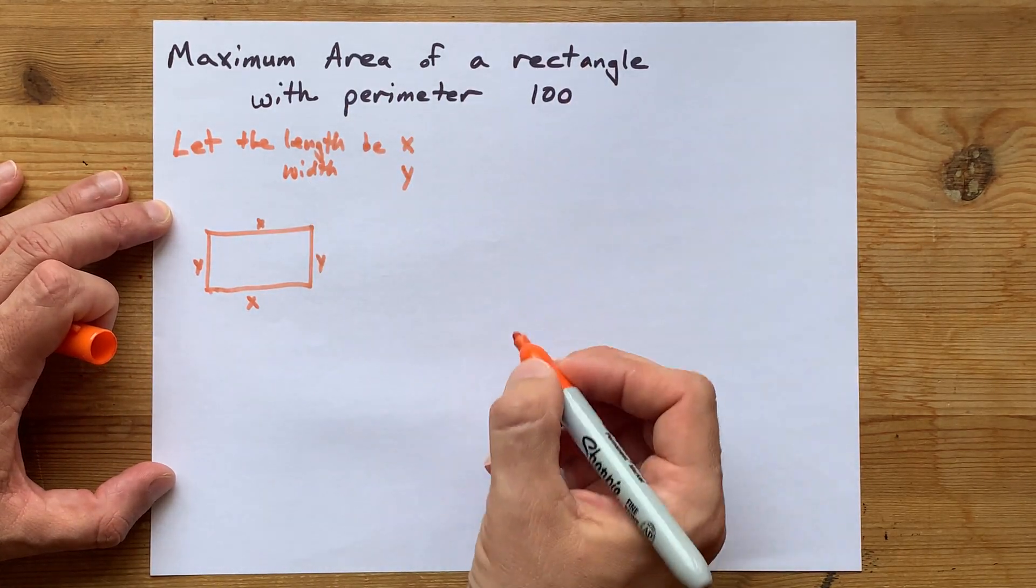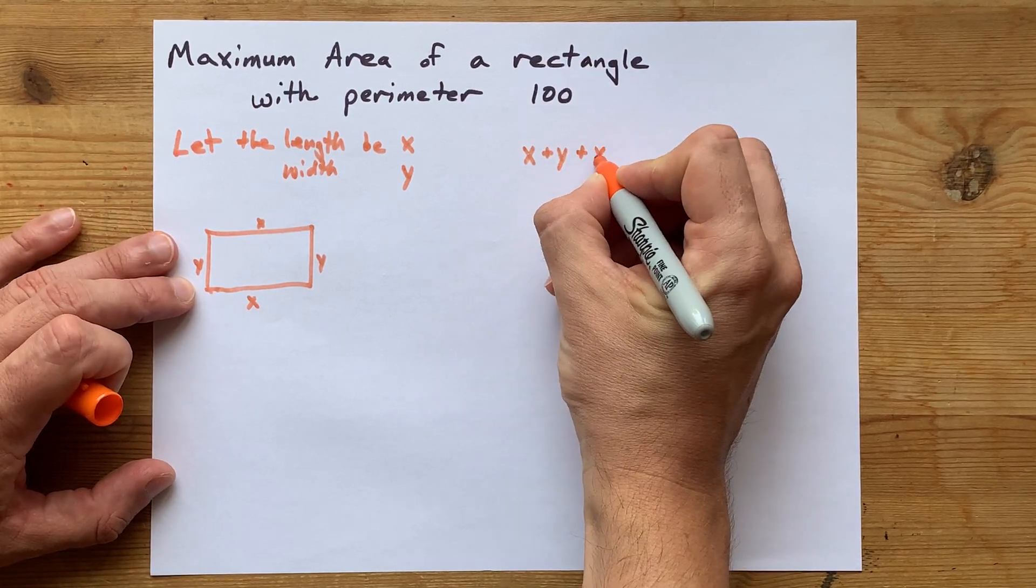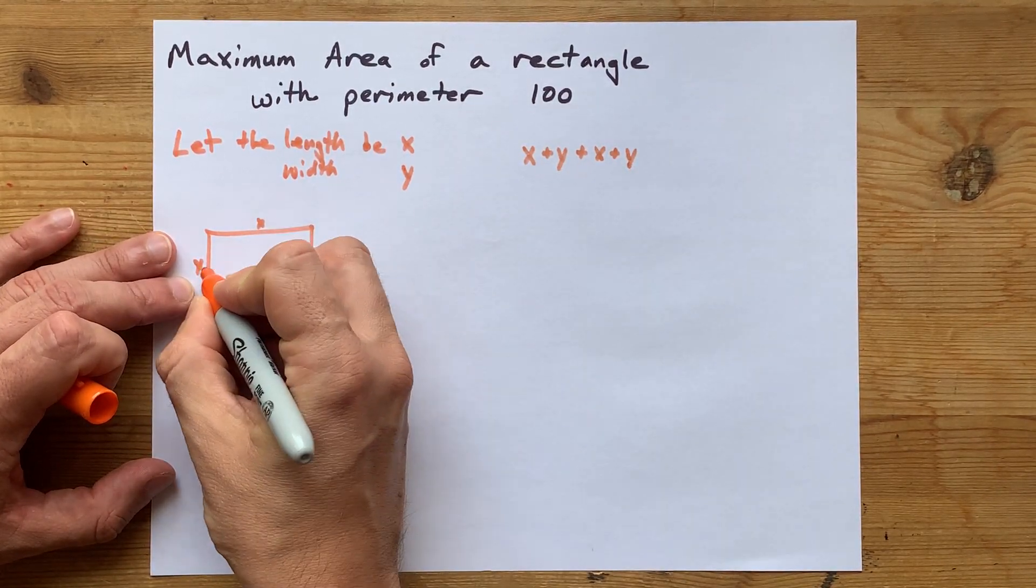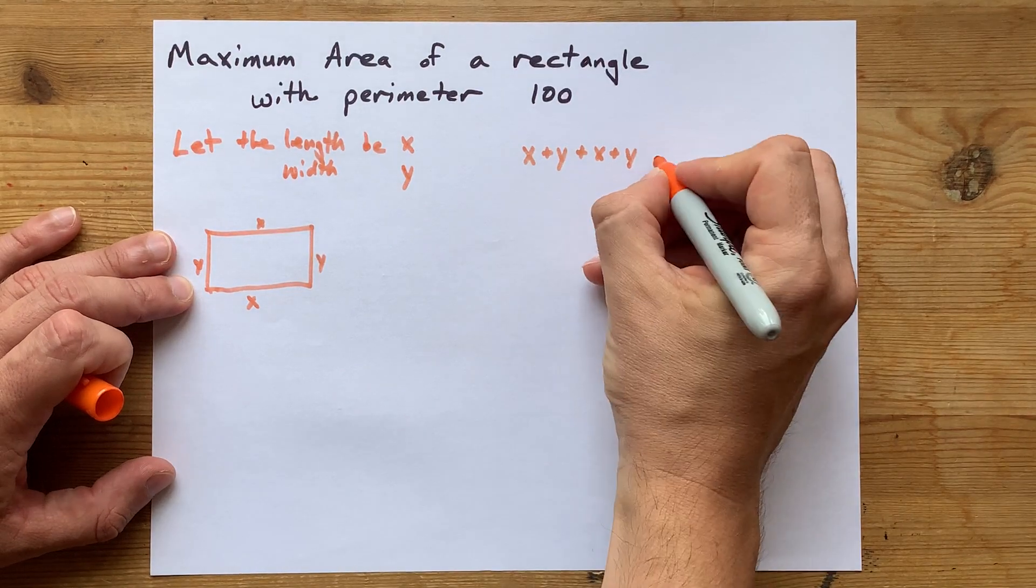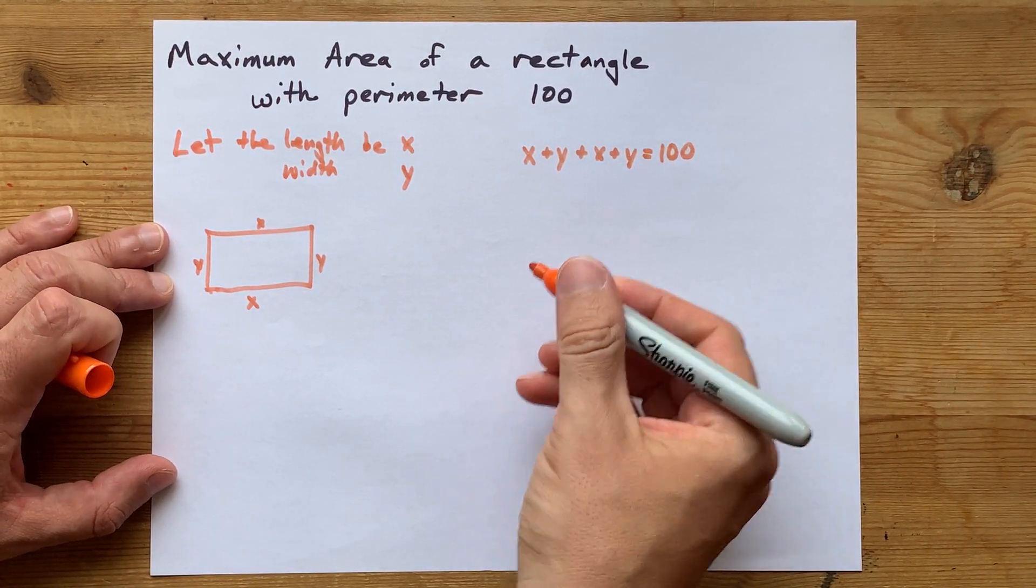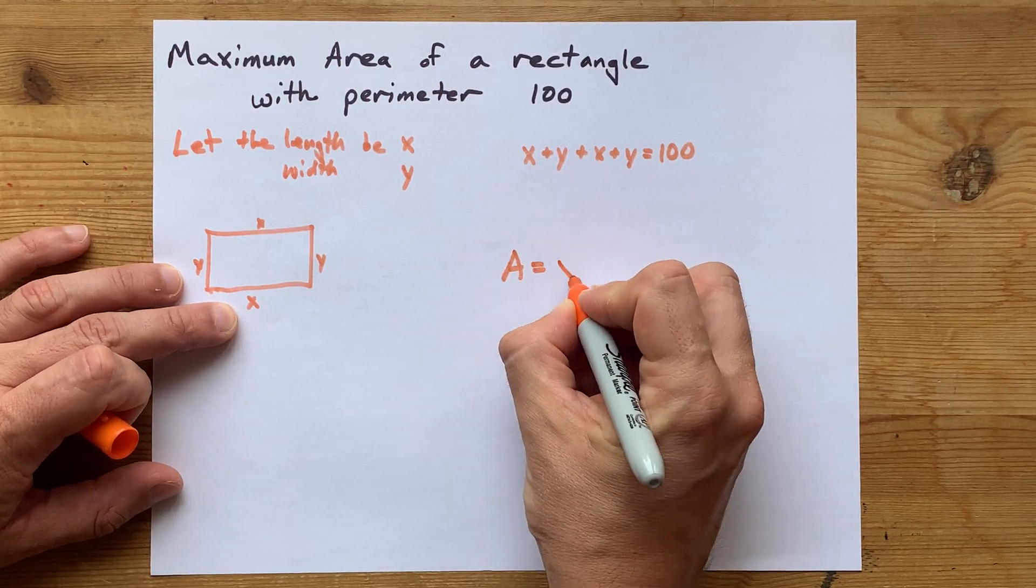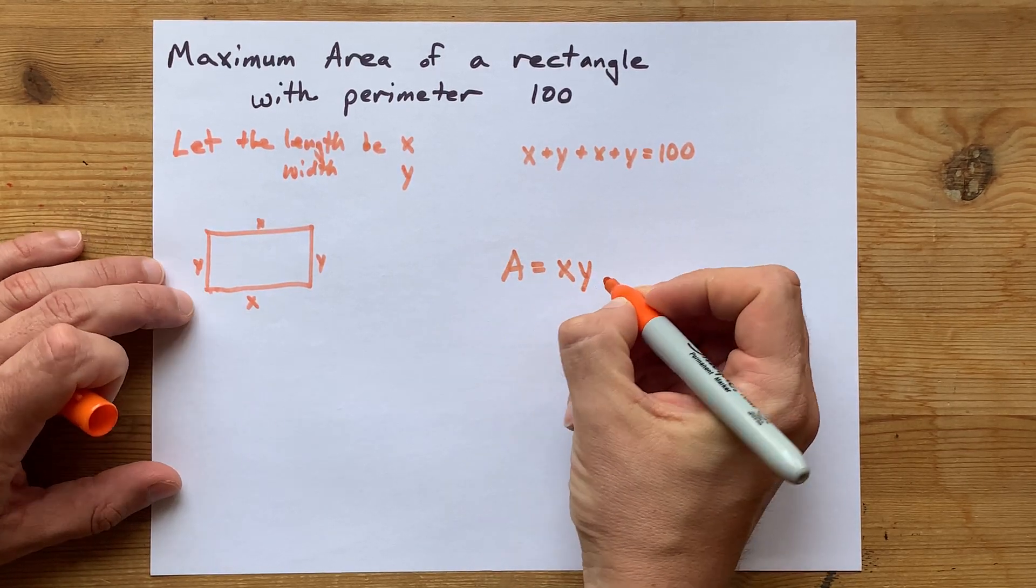So, if the perimeter is 100, then x plus y plus x plus y, that's one, two, three, four sides all combined, has to be 100. Now, the area of this rectangle is length times width, or x times y.